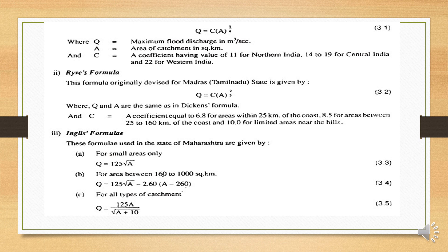The third is the Inglis formula, specially derived for Maharashtra state. There are three different sub-formulas: A, B, and C. For smaller areas within 160,000 km², and for all types of catchment, the three formulas are applied. For exam questions, we use the main Inglis formula: Q = 125A / √(A + 10). Note that if you use the Techmax book, the formula may appear the same but the answer will be slightly changed.